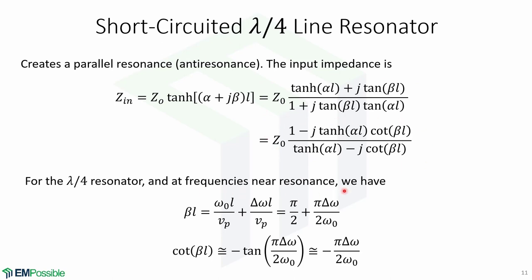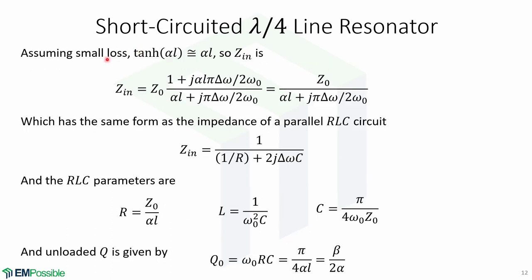Now we look at frequencies near resonance for the quarter-wavelength resonator. We have that beta*L equals pi over 2 plus pi*delta-omega over 2*omega-0, which leads to cotangent(beta*L) roughly equal to minus pi*delta-omega over 2*omega-0. Assuming a low-loss transmission line so that alpha*L is much less than 1, the hyperbolic tangent of alpha*L is roughly equal to alpha*L. Putting everything together, the input impedance simplifies to z0 over (alpha*L plus j*pi*delta-omega over 2*omega-0).